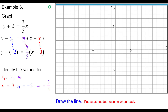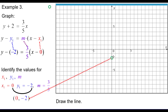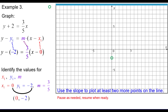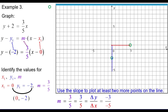Go ahead and draw the line. The point is 0 comma negative 2, which turns out to be the y-intercept. Using slope 3 fifths: go up 3, right 5 for one point. Or think of it as negative 3 over negative 5: down 3, left 5 for another. The three points are collinear — draw the line.